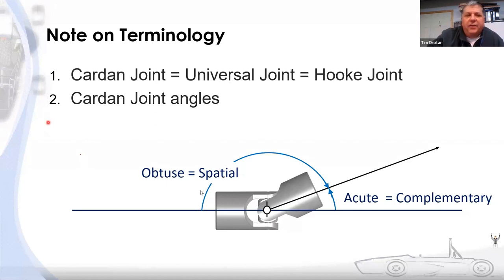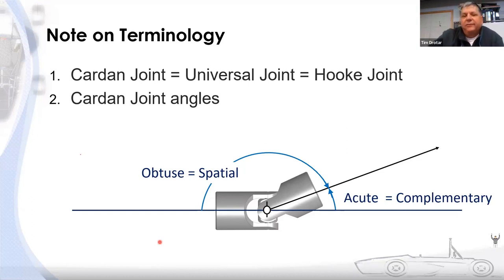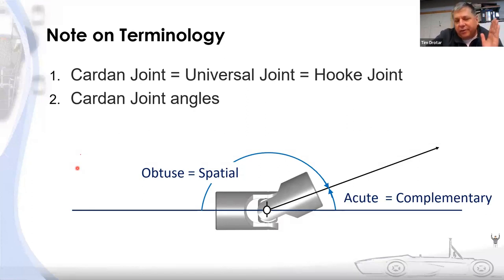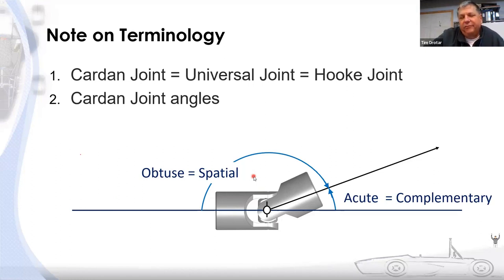Regarding cardan joint angles: we're going to refer to the obtuse angle — the orientation of the joint — as the spatial angle. In 2D it's just an obtuse angle, but we call it a spatial angle because, especially in passenger cars and light trucks, the input and output points of a cardan joint do not lie in a plane parallel to a longitudinal cross-section of the vehicle. So we use 'spatial angle' to recognize it's really a 3D angle. The acute angle we'll refer to as the complementary angle. When you buy a cardan joint from a supplier and they say it's a '45-degree cardan joint,' they're talking about the complementary angle. In this presentation we'll focus on the obtuse or spatial angle.